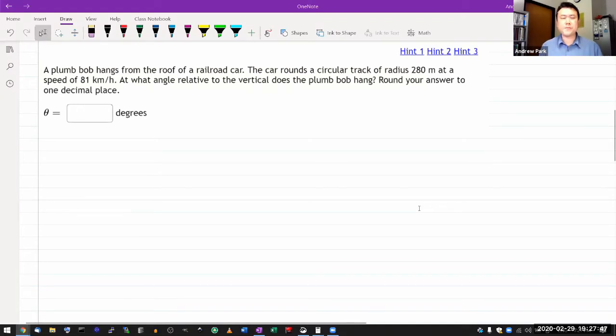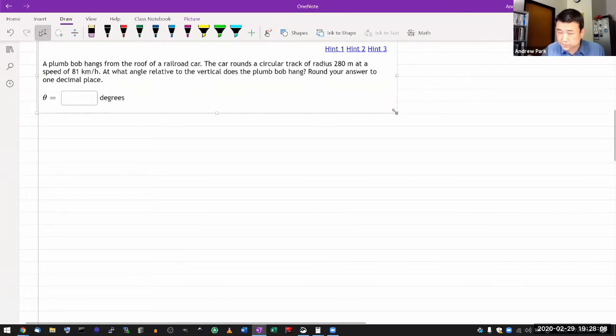A plumb bob hangs from the roof of a railroad car. The car runs a circular track of some radius at a speed. At what angle relative to vertical does the plumb bob hang? Let me draw a picture of this. I want to verify for myself that I understand. I think this might be one of those questions where for a faithful representation, you actually need two pictures.